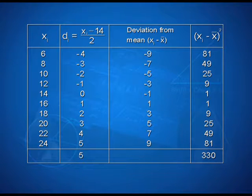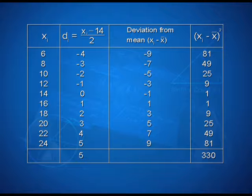We make this table. The first column represents xi. The second column shows the deviations calculated as xi minus 14 upon 2. We have the values minus 4, minus 3, minus 2, minus 1 and so on, and we calculate the sum as 5. The third column shows the deviations from the mean, xi minus x bar, with values minus 9, minus 7, minus 5, minus 3, minus 1, 1, 3, 5, 7 and 9. The fourth column represents xi minus x bar the whole square: 9 squared gives 81, 7 squared is 49, 5 squared is 25, and so on. The total comes out to 330.